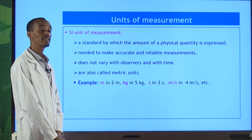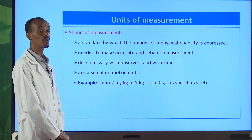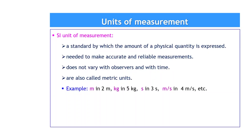SI units refer to the system of international units, which are the standards by which the amount of a physical quantity is expressed. We have local measuring methods — using our bodies, shadows — but those vary from person to person and from place to place, and are not always perfect or reliable.